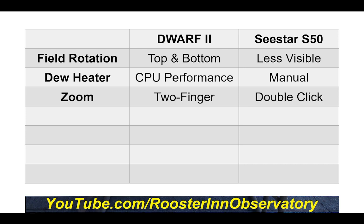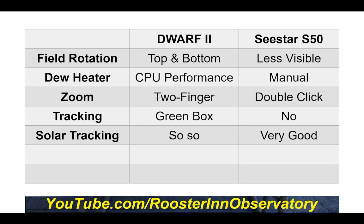Zoom: a nice feature of the Sea Star — double-click on an image and it will zoom in. On the Dwarf 2, use two fingers on the tablet screen to zoom in and out as much or as little as you want. The Dwarf 2 also allows object tracking by drawing a green box around a target — whether it's the Moon during daytime or a fast-moving animal; I tracked a turtle all afternoon in my backyard. The Sea Star doesn't have that feature, but it does well tracking the Sun during daytime. Solar tracking overall: the Sea Star is very good, while the Dwarf is so-so — I found myself repeatedly correcting its aim at the Sun.